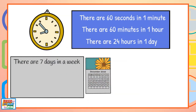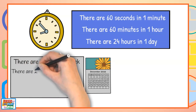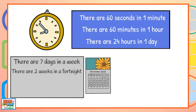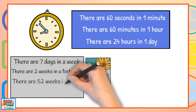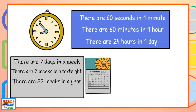There are seven days in a week. There are two weeks in a fortnight. There are 52 weeks in a year.